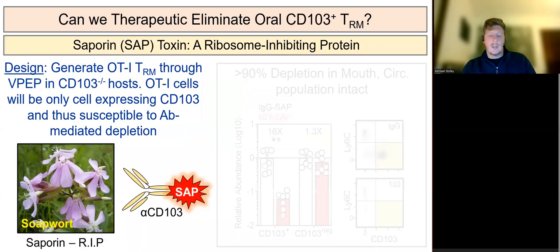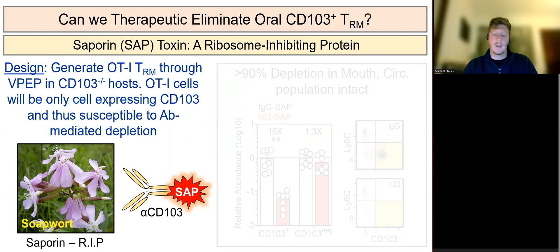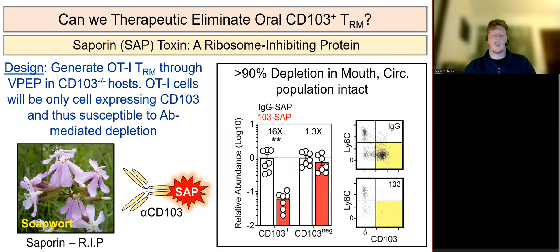We next developed an experimental approach for depleting CD103-expressing TRM in vivo. For this, wild-type CD8 T-cells were transferred and expanded through VPEP in CD103-deficient host mice, making those transferred cells the only population capable of expressing CD103. Toxin-conjugated antibodies against CD103 were then used to efficiently eliminate CD103-expressing oral TRM, which comprised the majority of oral TRM after VPEP, while leaving circulating memory T-cells intact.